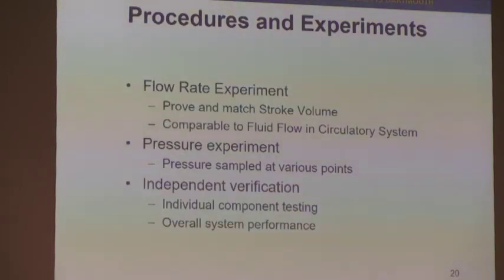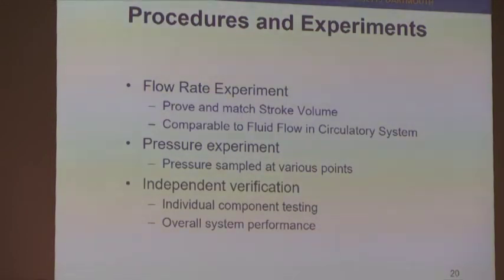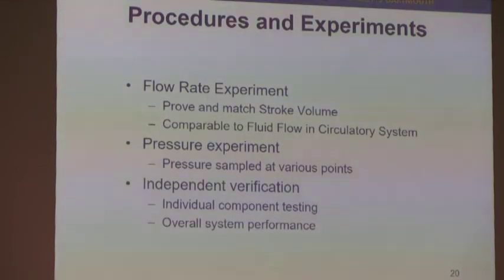We had a few different types of experiments. First, a flow rate experiment where we had to prove that circulation from the heart was identifiable and accurate to what we could produce with the pump, and comparable to the circulatory system in velocity, viscosity, and volume. For the pressure experiment, we sampled different points on the piping to see which one closely resembles the heart and is most optimal, choosing the center of each pipe. We also conducted an independent verification, individually testing each component separately and then putting them all together in different configurations to ensure no part failure and to identify any issues directly.